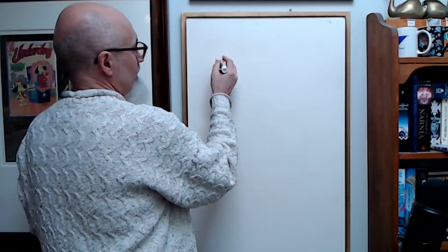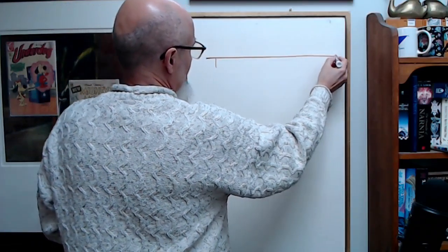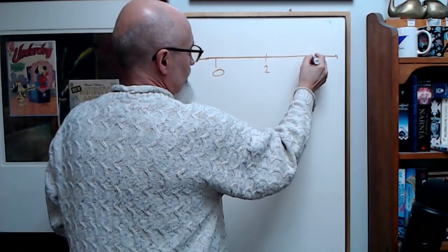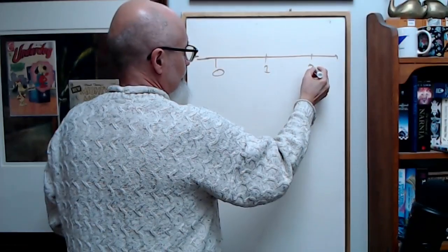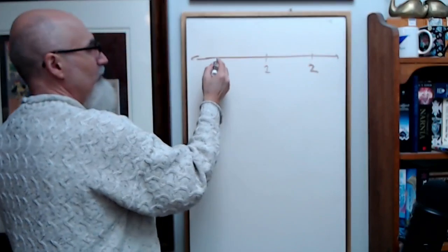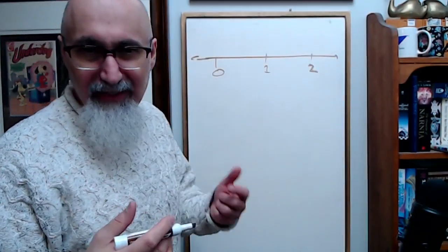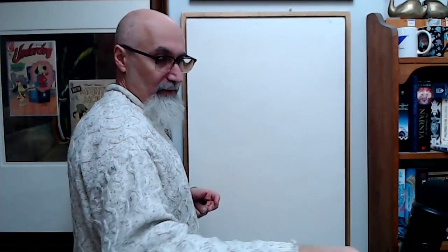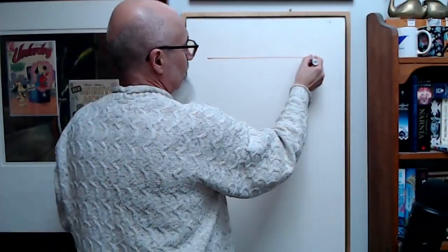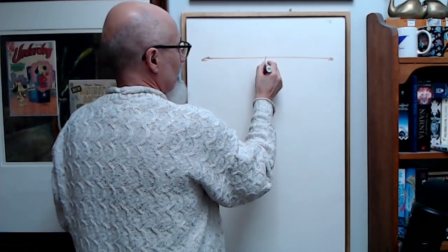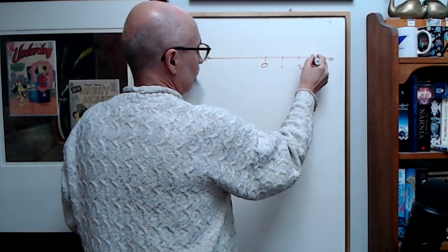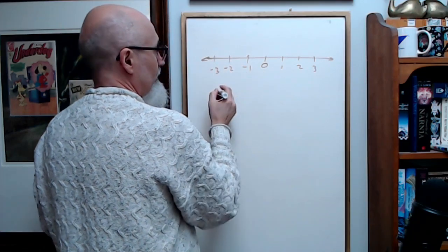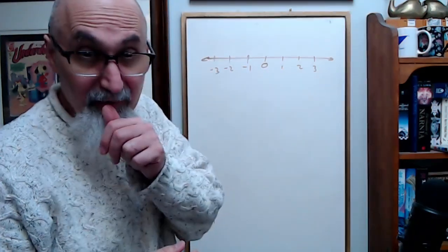Here's a number line — here's zero, here's one, here's two. How many numbers are there, and there are different categories of numbers. Let's talk about the real numbers: zero, one, two, three, and negative one, negative two, negative three.